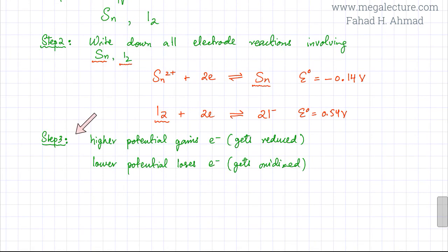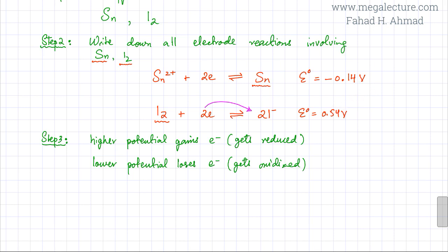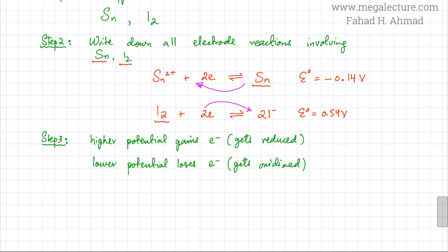We now move to Step 3: higher electrode potentials have a higher tendency to gain electrons. So a higher E° value will gain electrons and get reduced, while the lower potential loses electrons and gets oxidized. I have two electrode reactions. The higher potential is the iodine electrode at +0.54V — that's the one gaining electrons, going in the forward direction. The lower potential is tin at −0.14V, which loses electrons to form Sn²⁺.